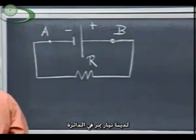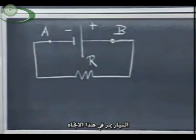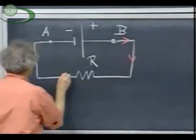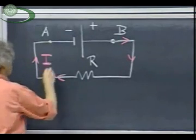And here we have a resistor R. So we have a current going. The current is going in this direction, the current I.